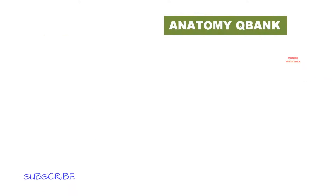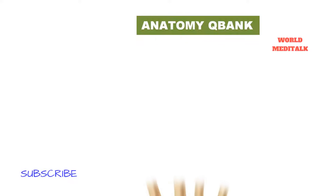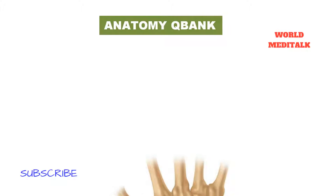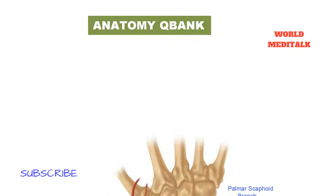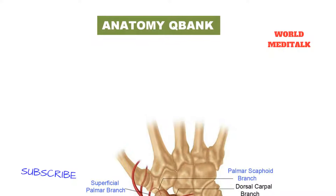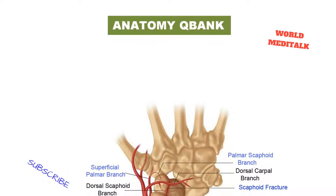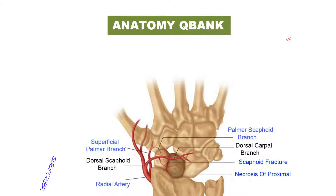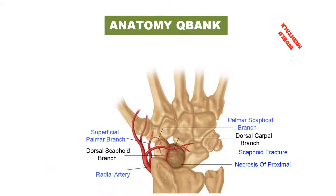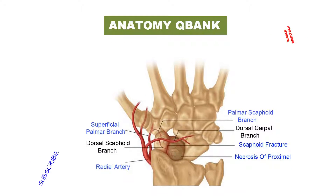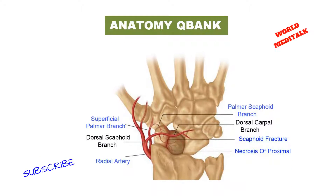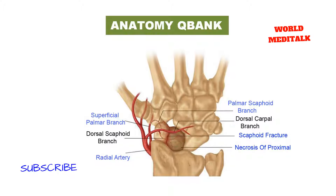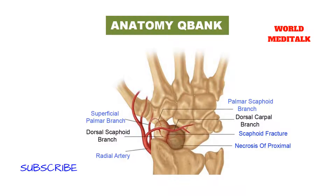The answer is from the distal end. The blood supply to the scaphoid enters from a small non-articular surface near its distal end. Transverse fractures through the scaphoid therefore carry a risk of non-union.